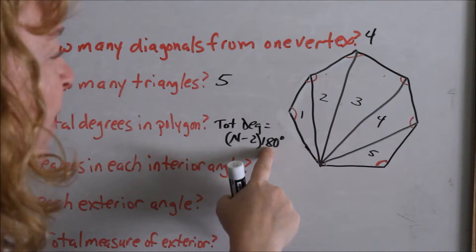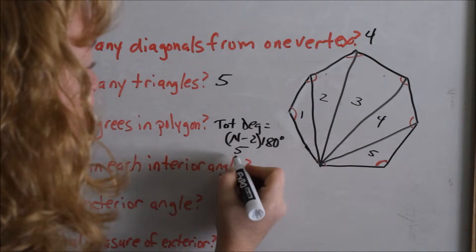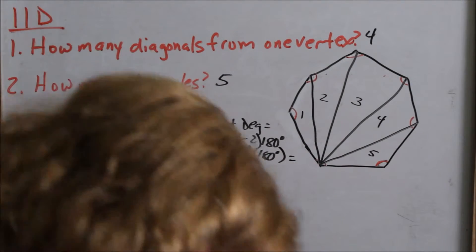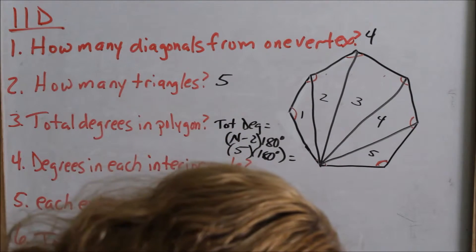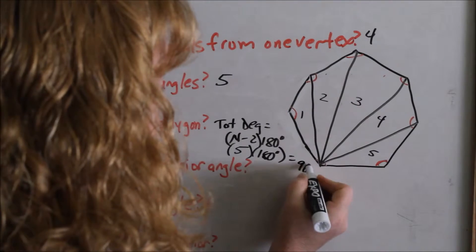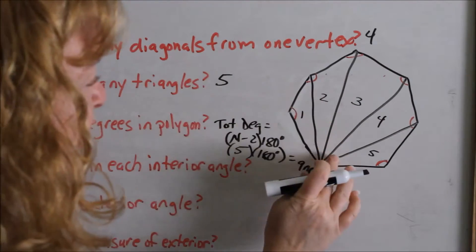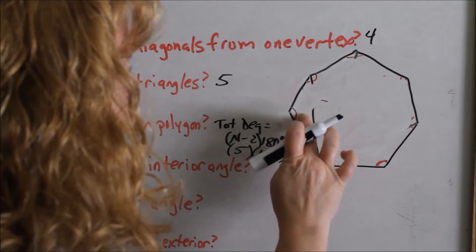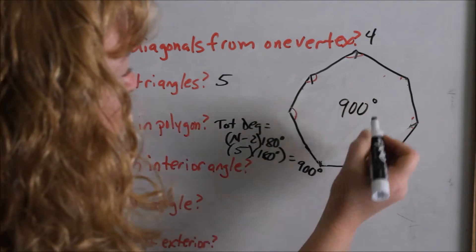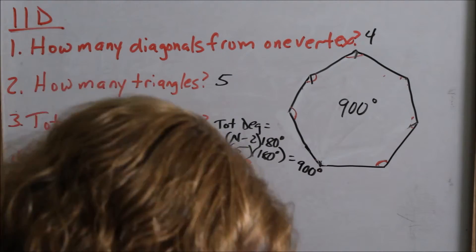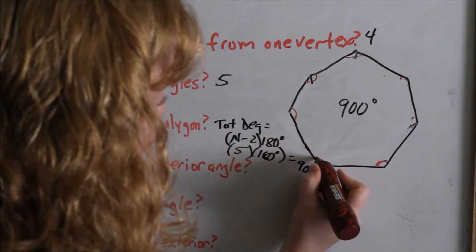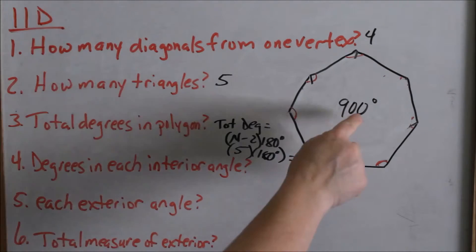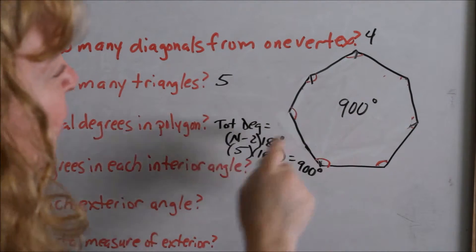Take that number of triangles and multiply by 180. We created five triangles — N minus two, seven minus two is five — times 180 degrees. Five times 180 gives us 900 degrees. So inside this polygon, there is a total of 900 degrees — just like a triangle has 180 degrees, any quadrilateral has 360 degrees, and this seven-sided polygon has 900 degrees.